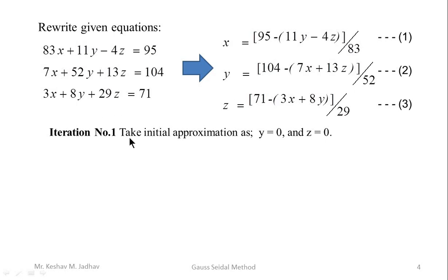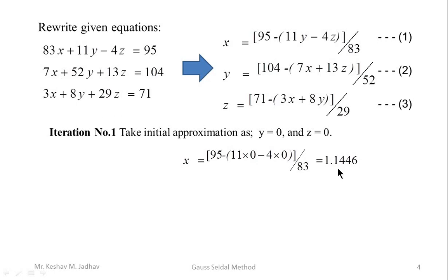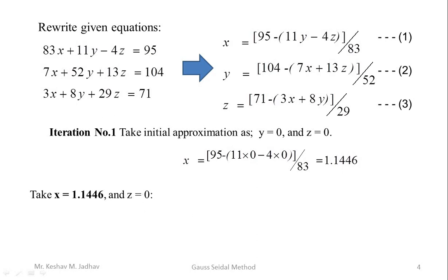In the problem, the initial approximation is y = 0 and z = 0. Substituting y = 0 and z = 0 into equation (1) gives the new value of x = 1.1446. Then in equation (2), we substitute the new x = 1.1446 and z = 0, giving the new value of y = 1.8459.